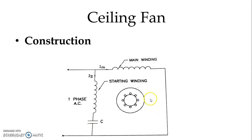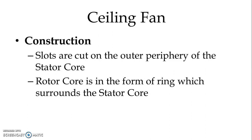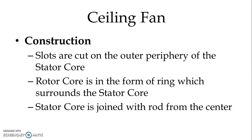We apply single-phase supply and the rotor is a normal squirrel cage type. In the case of a ceiling fan, we use a motor in which the stator remains at the center and the rotor surrounds the stator. Slots are cut on the outer periphery of the stator core to house the stator winding. The rotor core is in the form of a ring which surrounds the stator core. The stator core is joined with a rod from the center to hang to the ceiling.